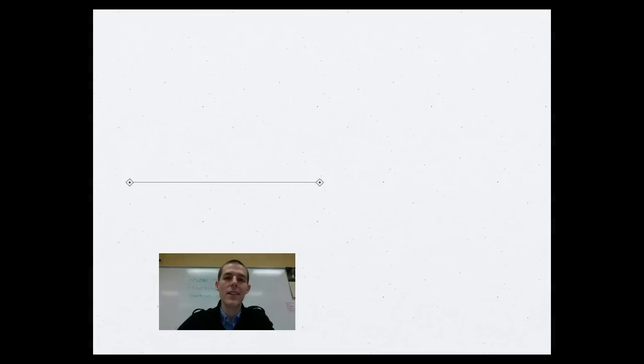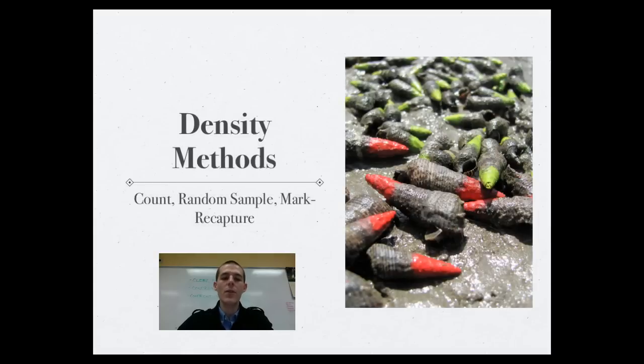Now, calculating population density and population in general can be a difficult thing to do. So there's three methods that scientists use to calculate population density and also to estimate the size of a population. First one is a simple count. So if you're dealing with big mammals or big organisms, like whales, elephants, buffalo, things like that, scientists can fairly easily fly over a population in an airplane or a helicopter, count it, and then use that to extrapolate an estimate of population size.